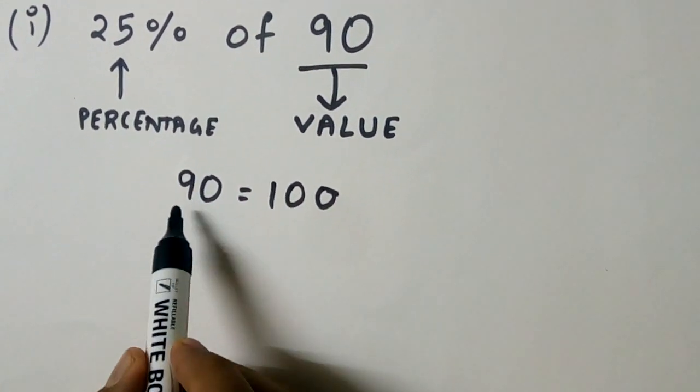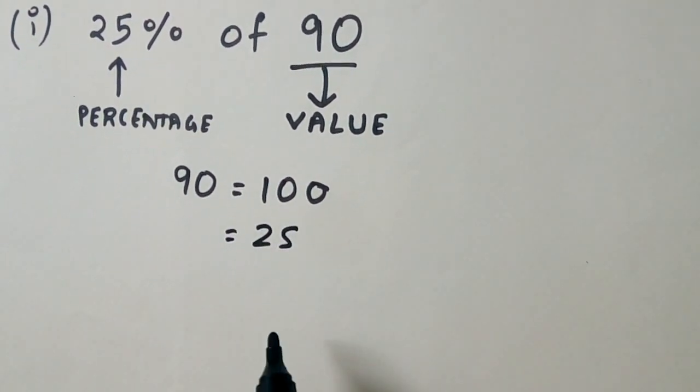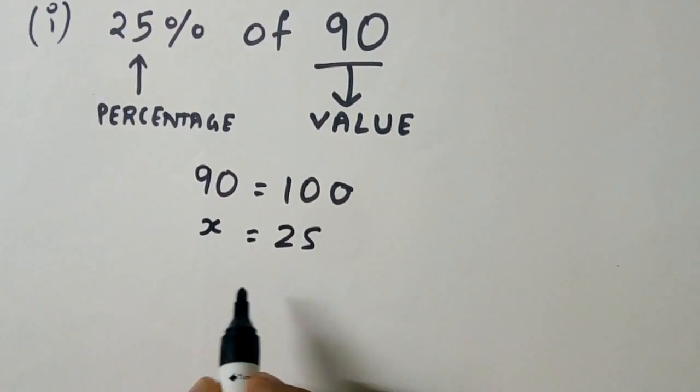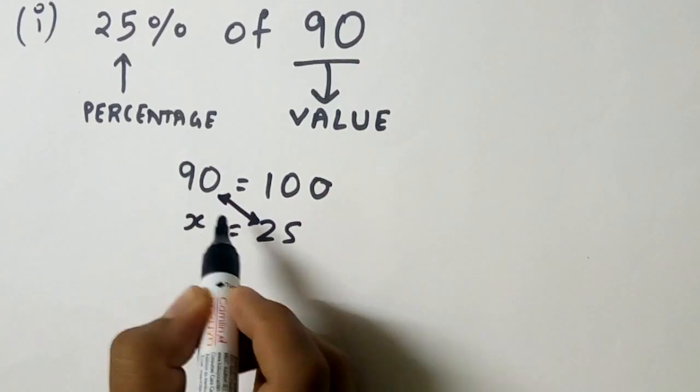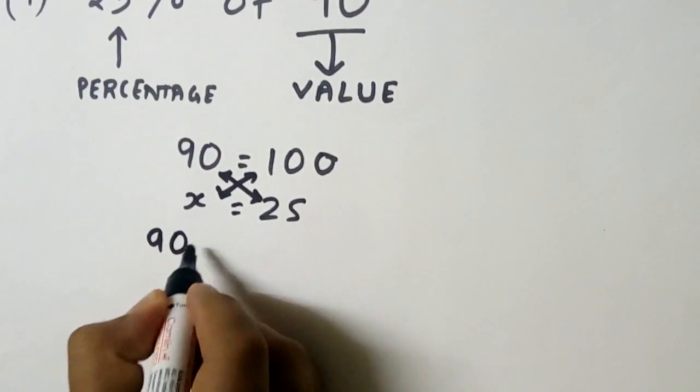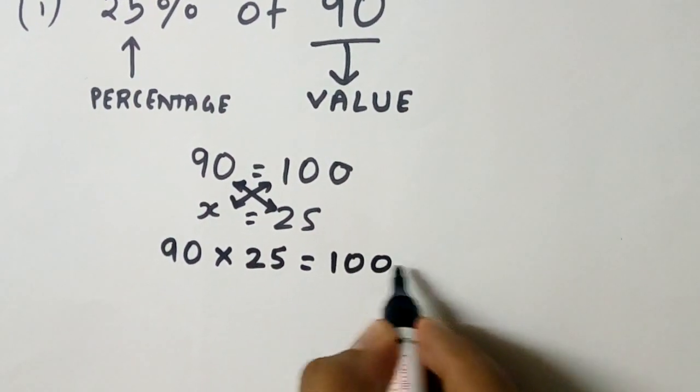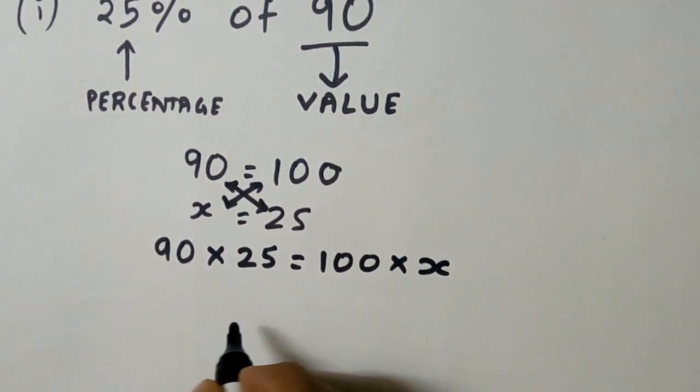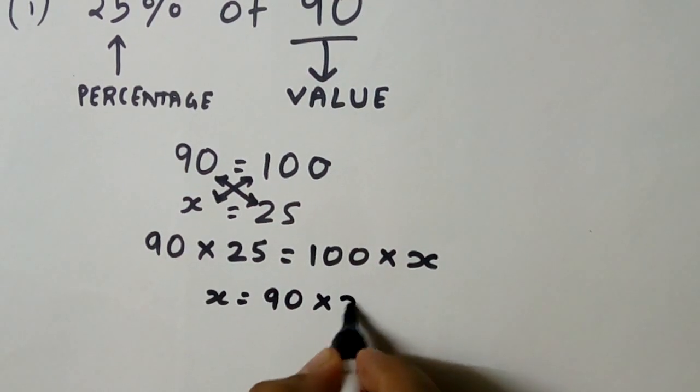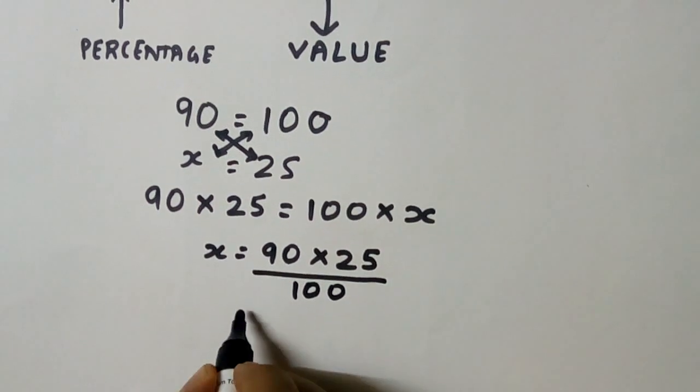Now that we know that 90 is equal to 100%, what will be 25%? So let that be x. Now we are going to cross multiply the two terms, and it will be 90 × 25 = 100 × x. So x will be equal to 90 × 25 divided by 100.